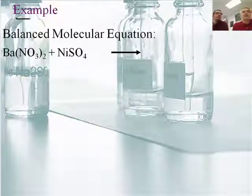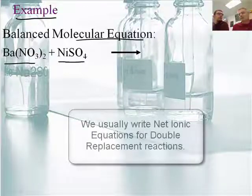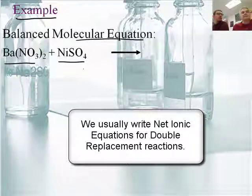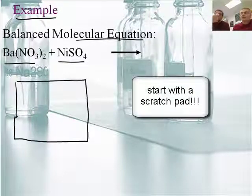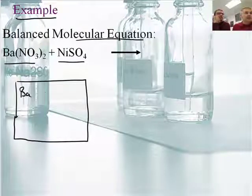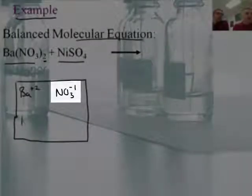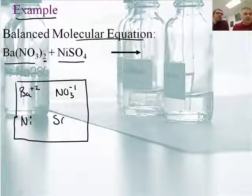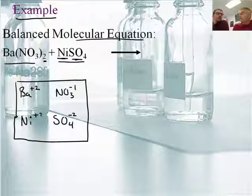Here is the first example. I want to write three things: the molecular equation, the ionic equation, and the net ionic equation. I have a double replacement reaction — this primarily works in double replacement reactions. What's the first thing we should do? We should make a scratch pad. The scratch pad is even more critical here than previously. So I've got barium, Ba, with a plus two charge. And nitrate is NO3, negative one — notice I did not bring the two down, it's just NO3 negative one because there are two of them. Then I have nickel — I don't know its charge yet. And sulfate, SO4, with a charge of minus two from the back of your periodic table. If there's one nickel and one sulfate and the charge of sulfate is minus two, the charge of the nickel must be plus two.